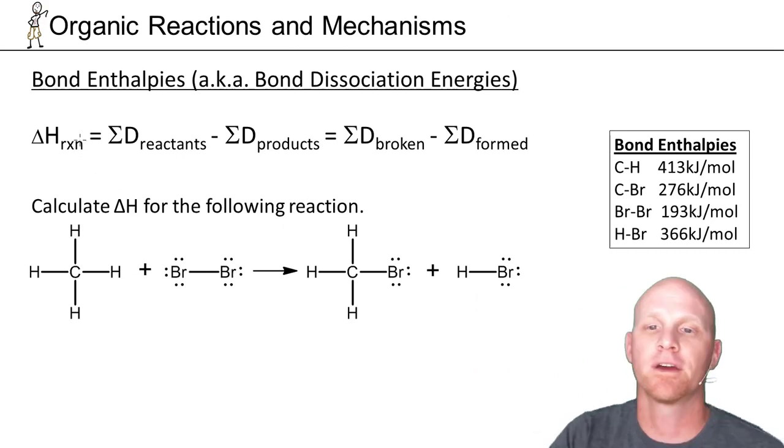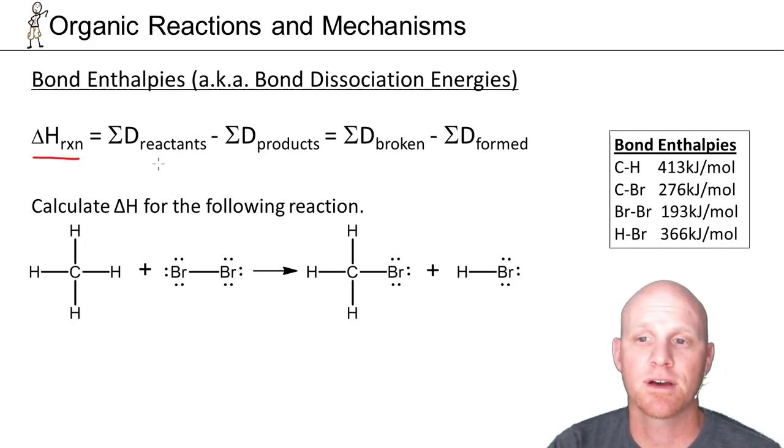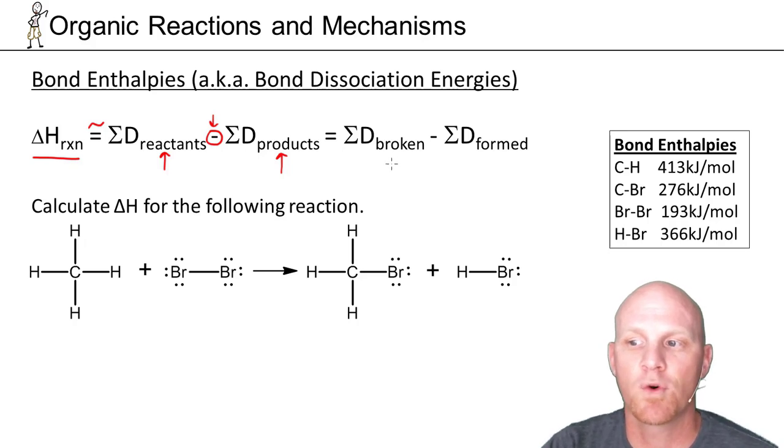I said a minute ago that bond enthalpies here could be used to approximate delta H of a reaction. The reason it's approximated, because bond energies or bond dissociation energies are typically given as averages. The bond's going to have a little bit different energy from environment to environment, from molecule to molecule. Usually what we're giving you are averages, so this is really going to be somewhat approximate. But essentially all you do is sum up all the bonds of the reactants and subtract out all the bonds of the products. We're summing up the reactants because that's where the bonds would be broken. We're subtracting the products because when we're forming the bonds in the products, it would actually be releasing energy. But more simply, it's usually just easier to sum up the bonds that are simply broken minus the ones that are formed rather than all the bonds in the reactants and products.